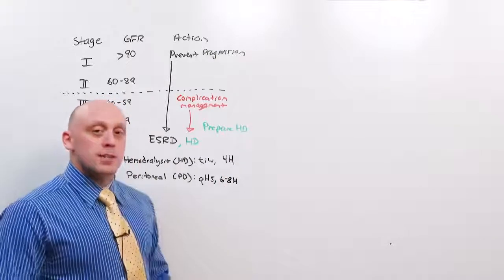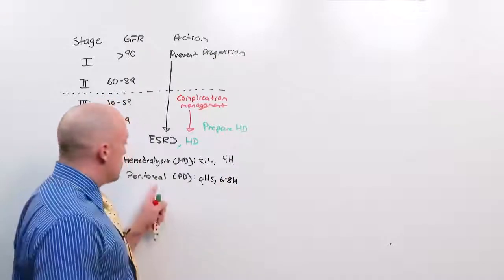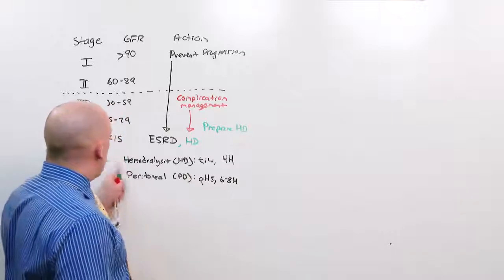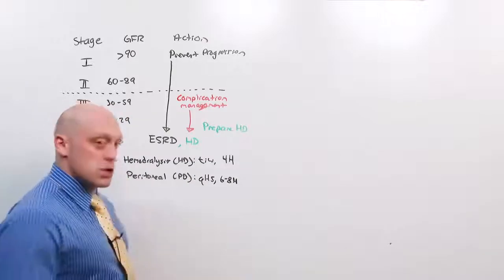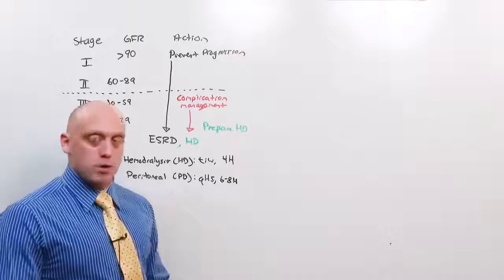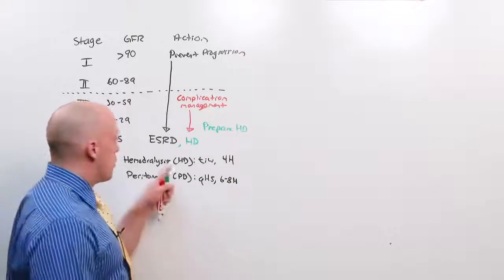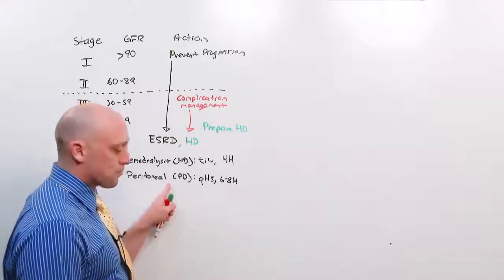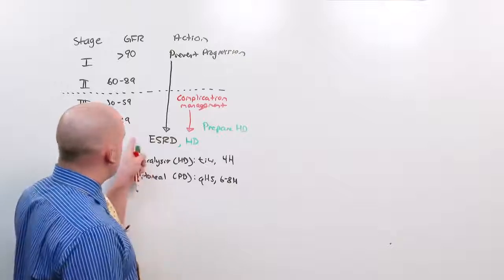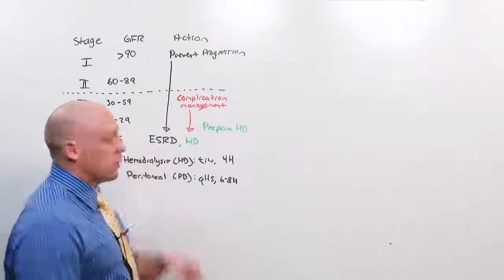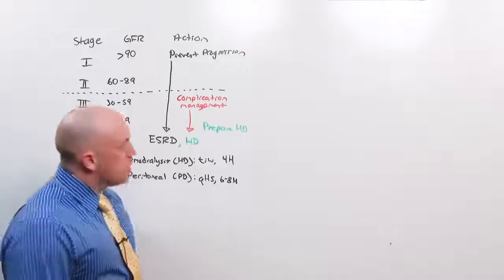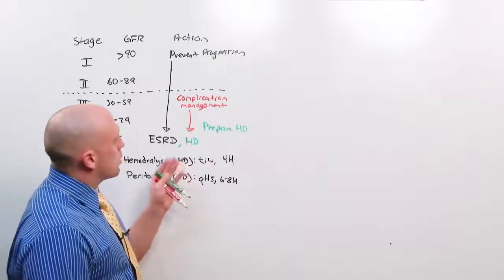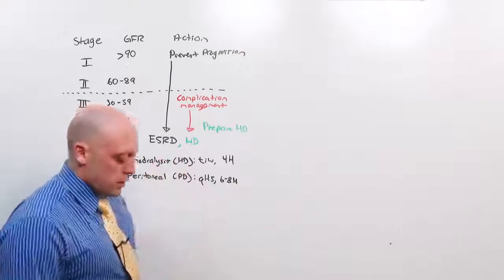Which one you pick is not relevant. Peritoneal is technically cheaper, but if they're at this point they need one or the other, and patients generally try one and switch back and forth. Just know that there are two, both hemodialysis and peritoneal. And once the person hits CKD stage 5, they're going to need dialysis. So beyond that, we want to prevent progression and manage complications.